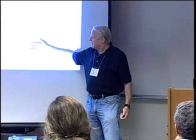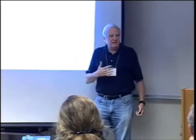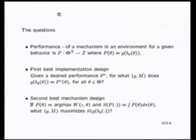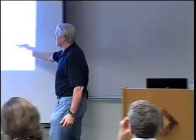What I think of as second-best mechanism design comes about by saying: if we can't find such mechanisms, what's the next best we can do? The way this usually goes is we come up with some kind of welfare function, or some function of the outcome in the environment, attach some likelihood function and probabilities, then try to figure out what mechanism maximizes the expected value of the performance — maximizing W of Z.